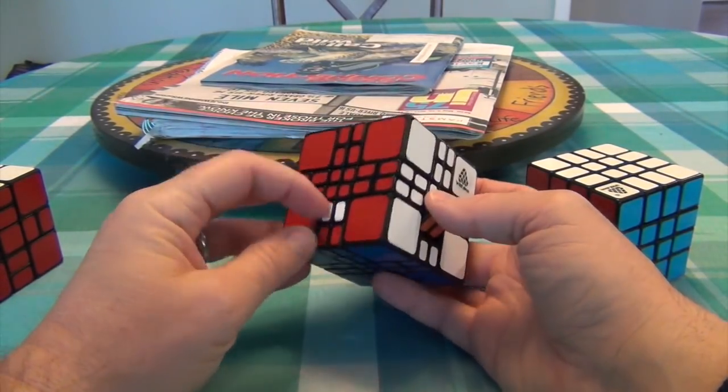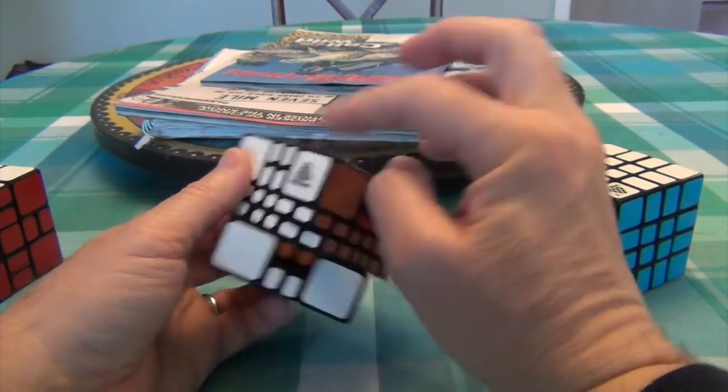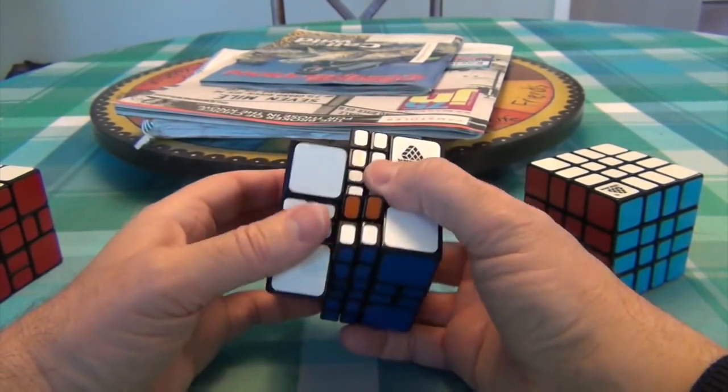So as promised, this white one slid to here without rotating, this red one went to here and rotated, and this yellow, orange one rather, went to here and rotated. So that's going to be important in terms of getting these in for the future.